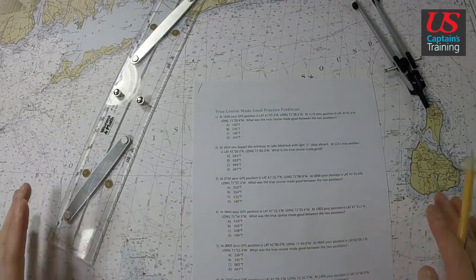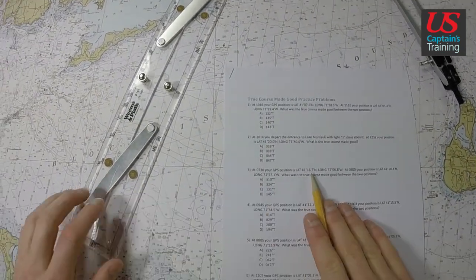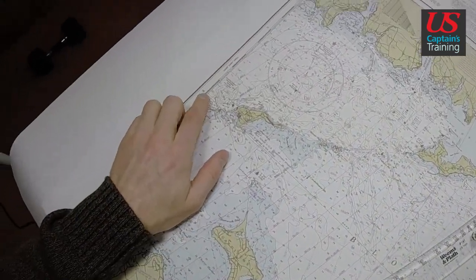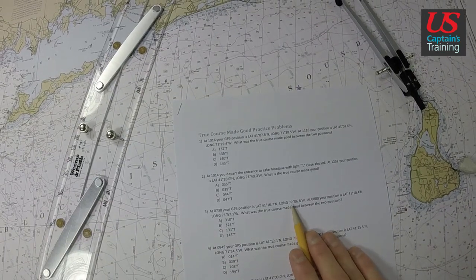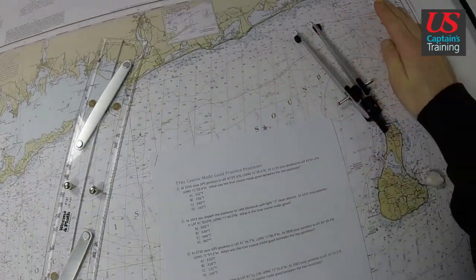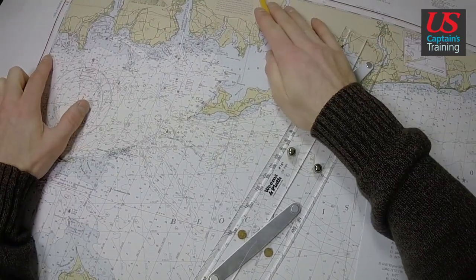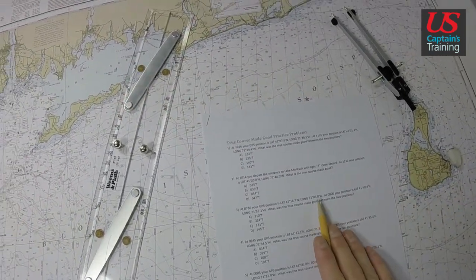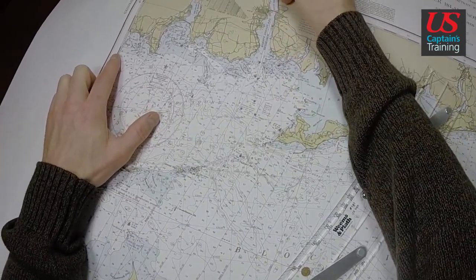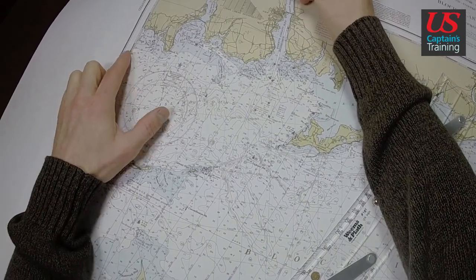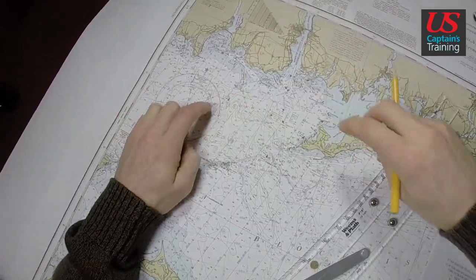Now, we need to ask ourselves where are we on the chart in general. So we're at 41 degrees 16.7 minutes and 72 degrees 06.8 minutes. So over here, we're at 71.30, 40, 50, 72. We have 06.8, so we're right here, and then we're at 16.7. We're going to be right about here.